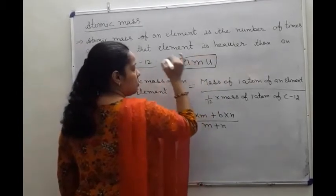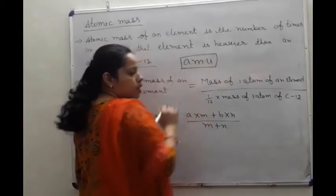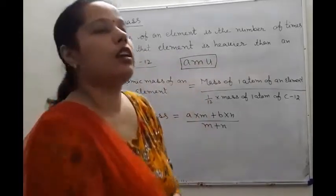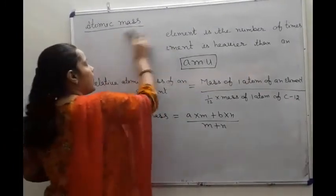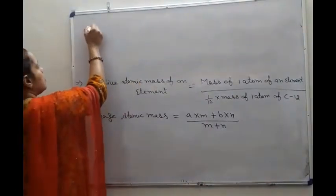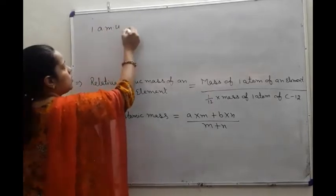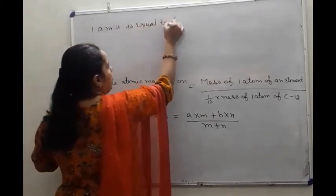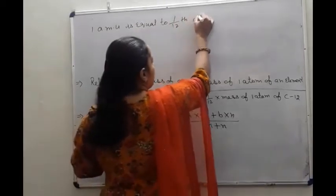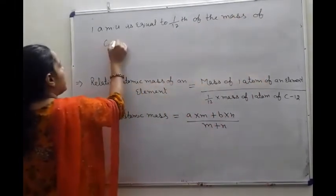Atomic mass scale: how can we express atomic mass? Atomic mass can be expressed in atomic mass units. One atomic mass unit, 1 amu, is equal to 1/12th of the mass of the carbon-12 isotope.